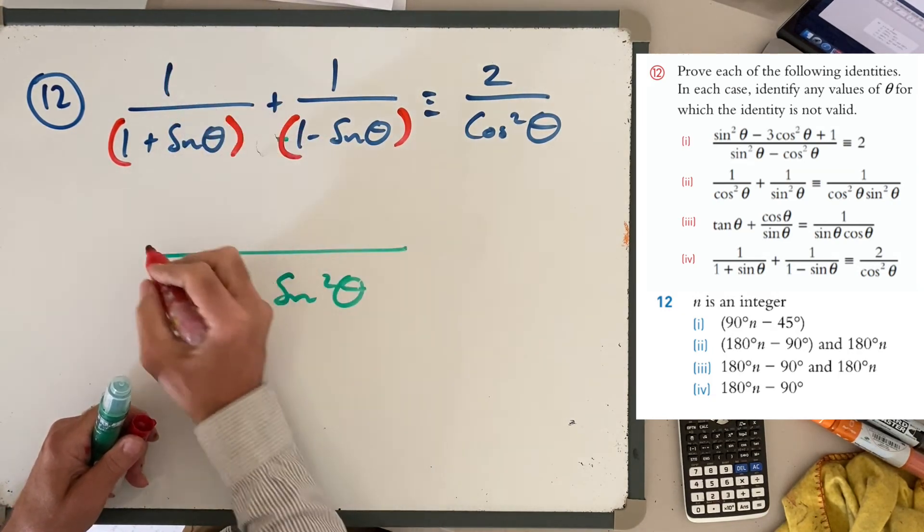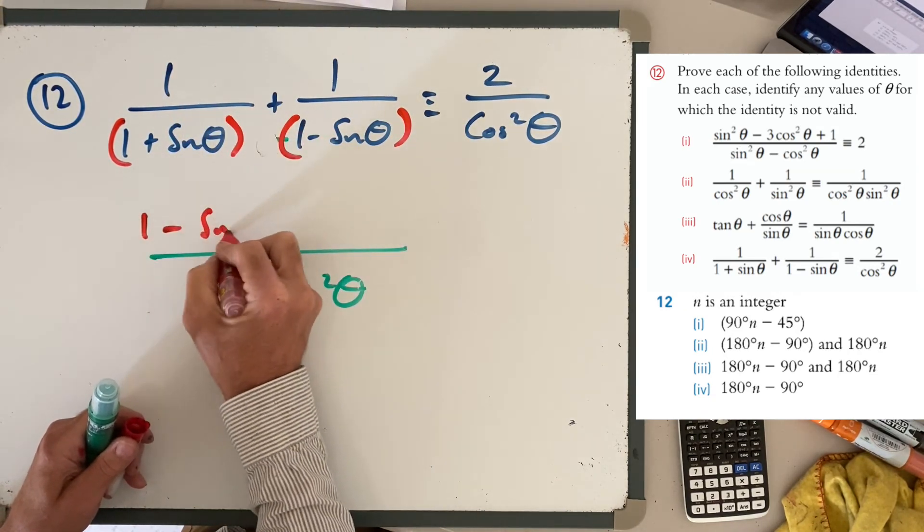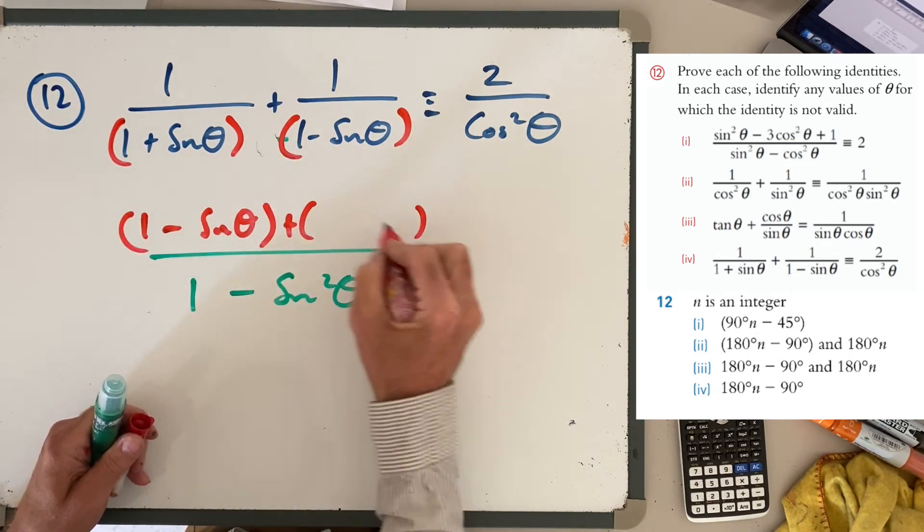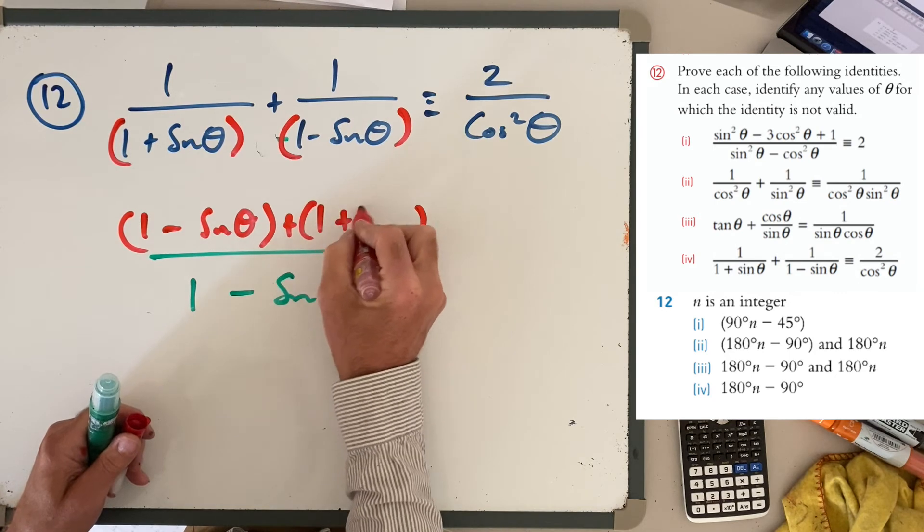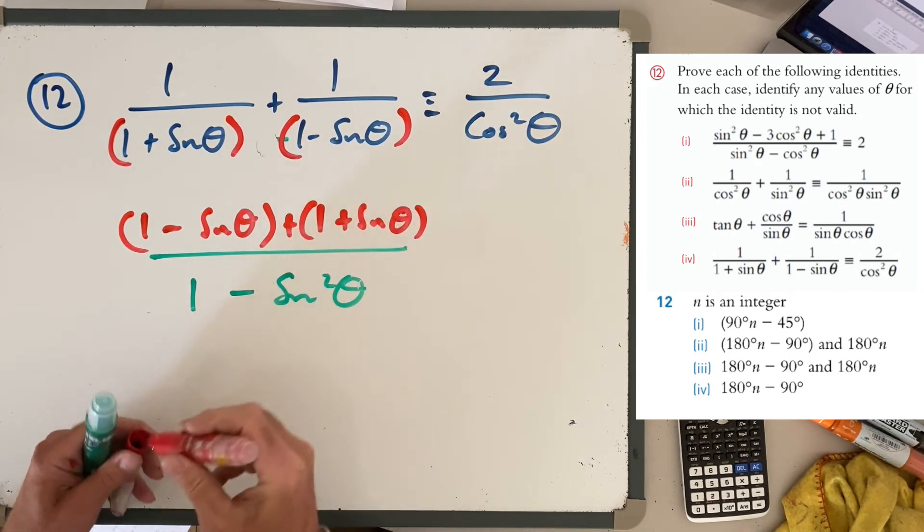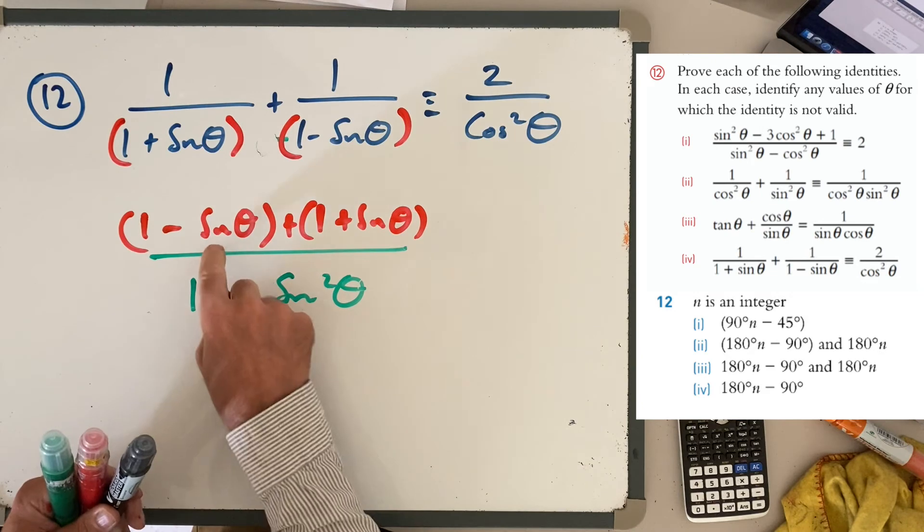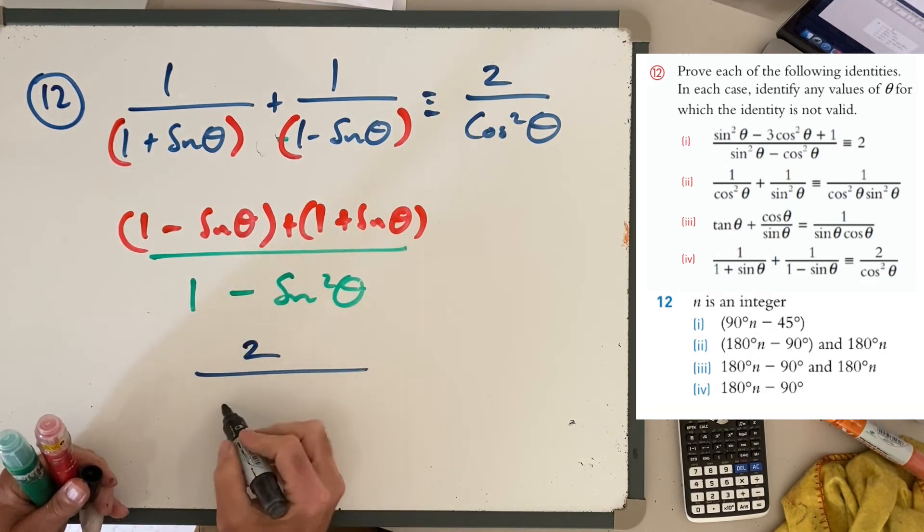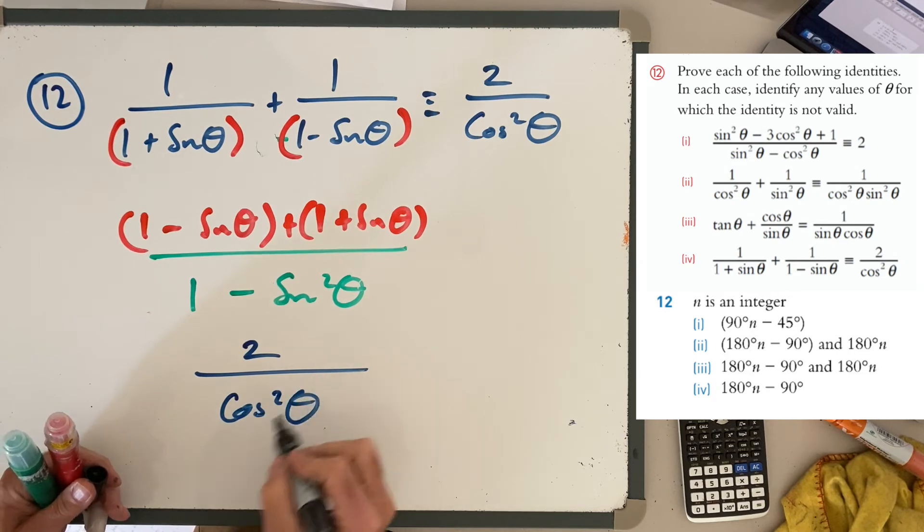Multiplying those two out together, you end up with that. Then that times that becomes 1 - sin θ, plus, and then inside here, that times that, 1 + sin θ. You can see how they cancel out, so you end up with 2 over, and that can be written as cos² θ.